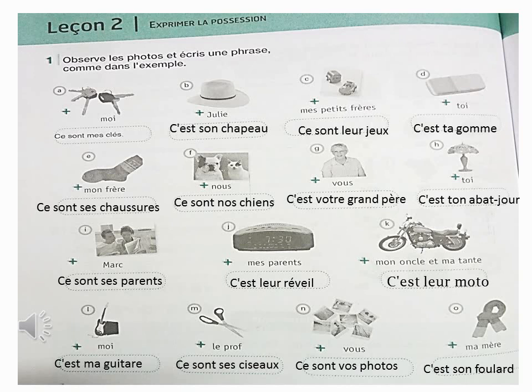On va utiliser l'adjectif possessif. C'est leur moto. C'est ma guitare. C'est ses os. C'est son vos photos. C'est son foulard. Toujours, pour bien utiliser l'adjectif possessif, il faut bien savoir où est le sujet de la phrase.